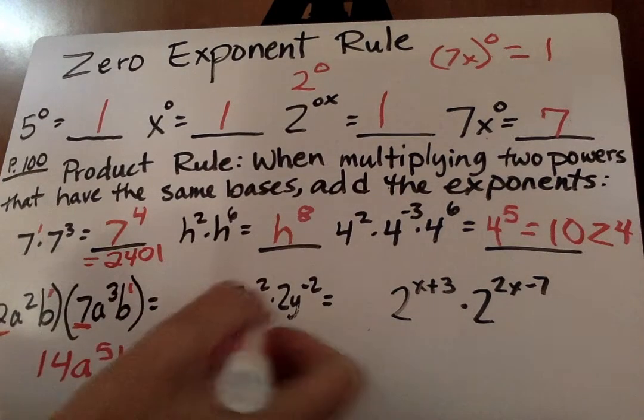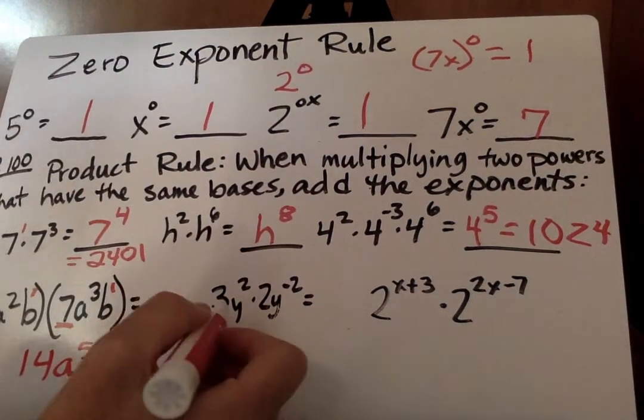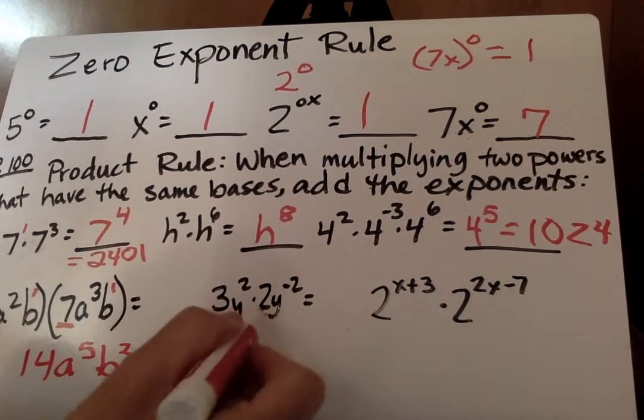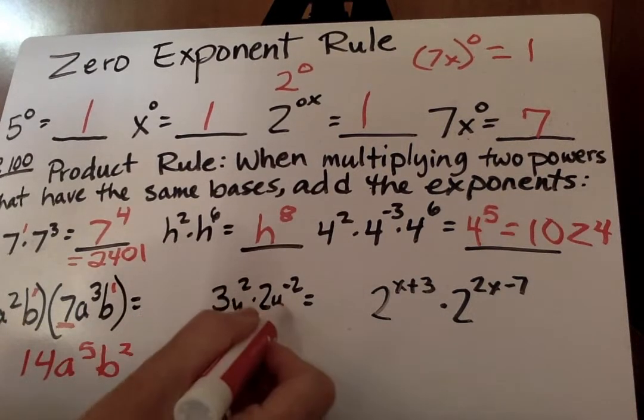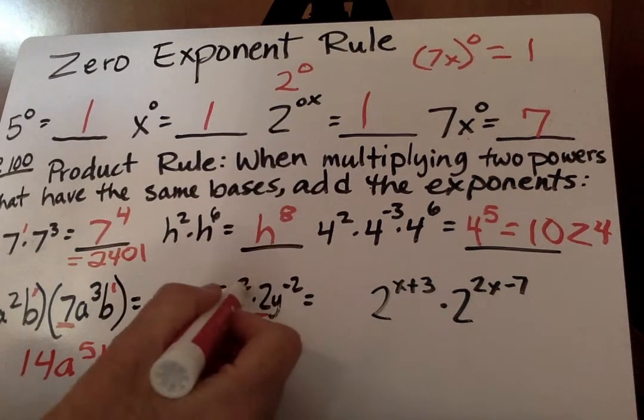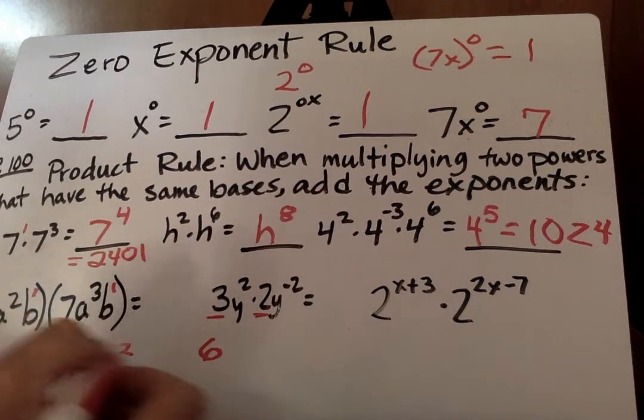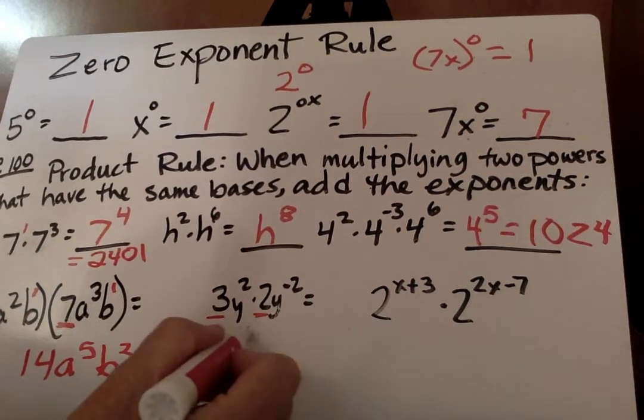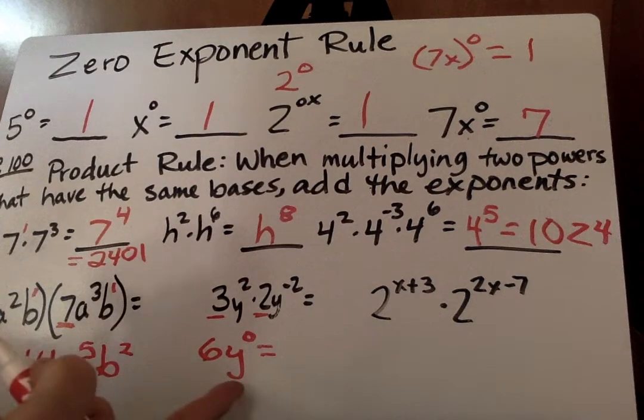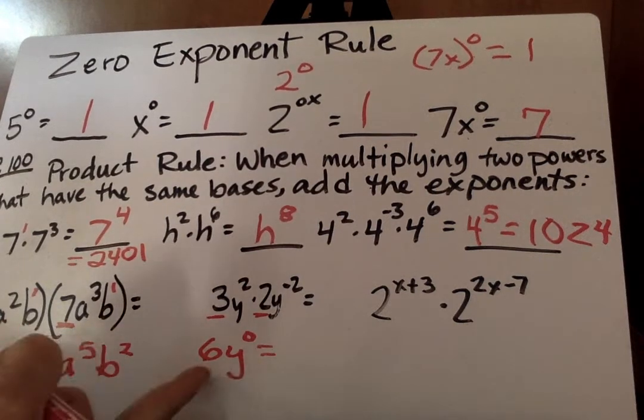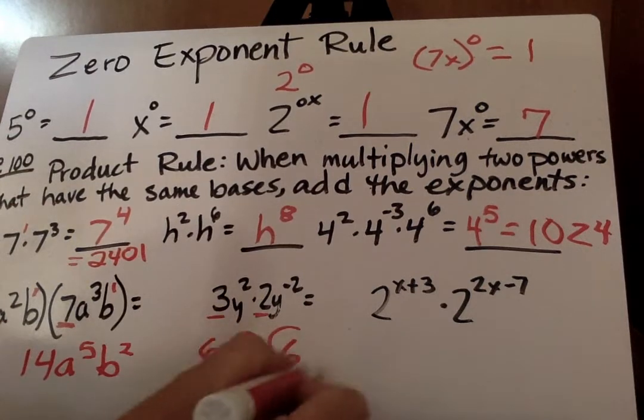Now, I'll let you do that one. Actually, that one's a little bit of a trickster. 3 times 2 is 6. And then this one, y times y, we add the exponents. 2 minus 2 is y to the 0 power. But anything to the 0 power was what? That's correct, 1. 1 times 6, your final answer should be 6.